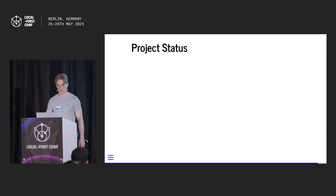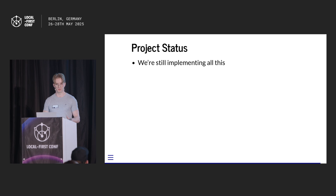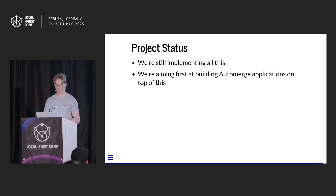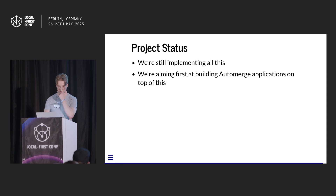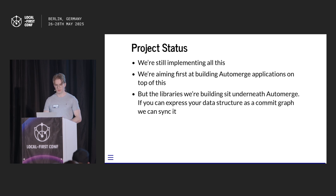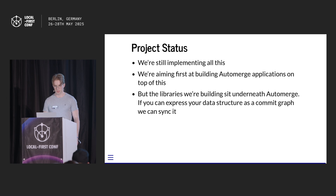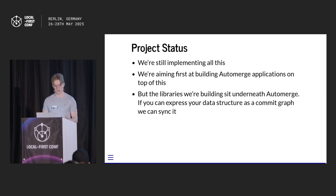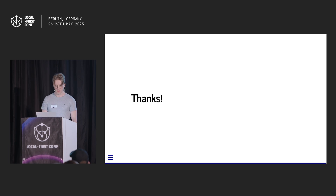The project status: right now we're still implementing all of this. We have prototypes that have worked with automerge and automerge-repo. But everything we're building — all of the libraries — don't know anything about automerge. They're intentionally designed to be usable with other data structures, anything expressible as a commit graph. The core implementation is also designed to be used via FFI across lots of different platforms, so we don't have to keep rewriting it.